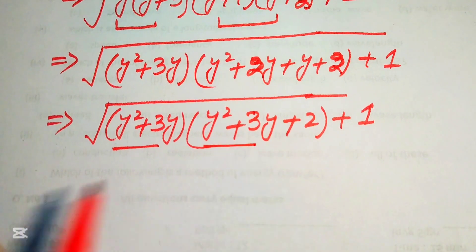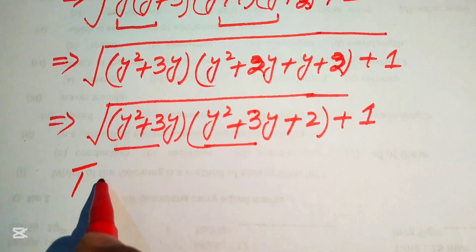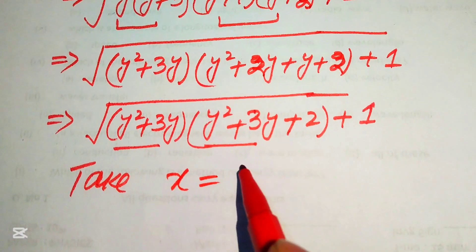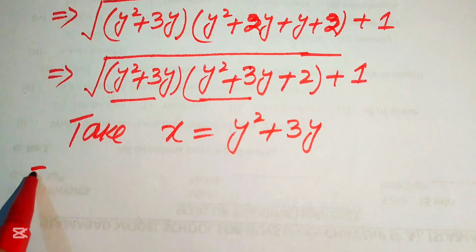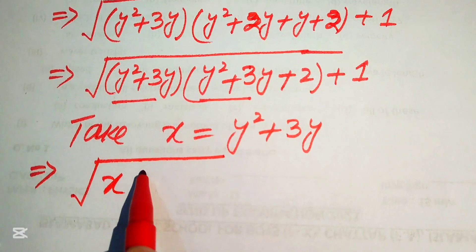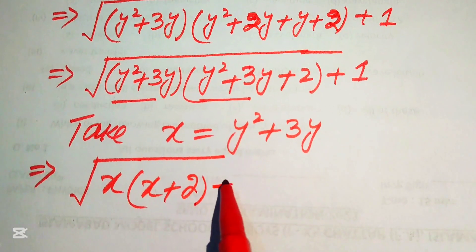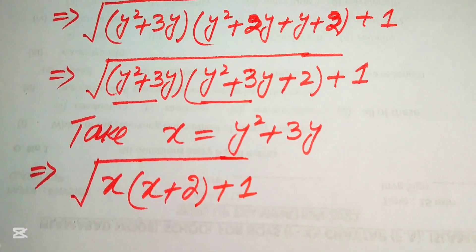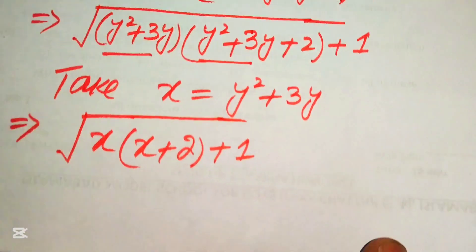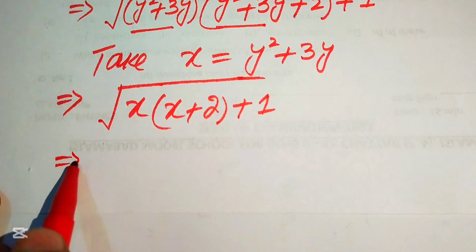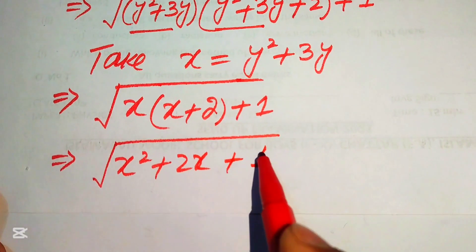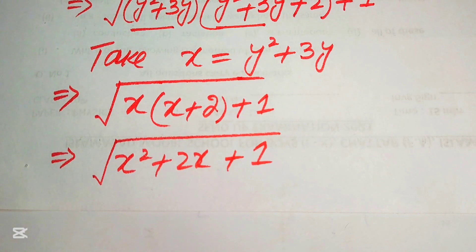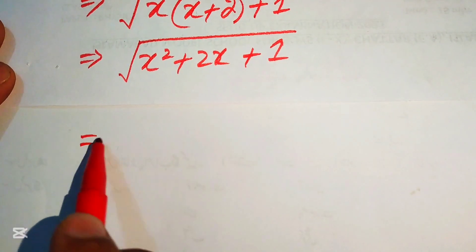We now let x equal y² + 3y. Substituting, our expression becomes x times (x + 2) plus 1. Expanding gives x² + 2x + 1, which is a quadratic in x.